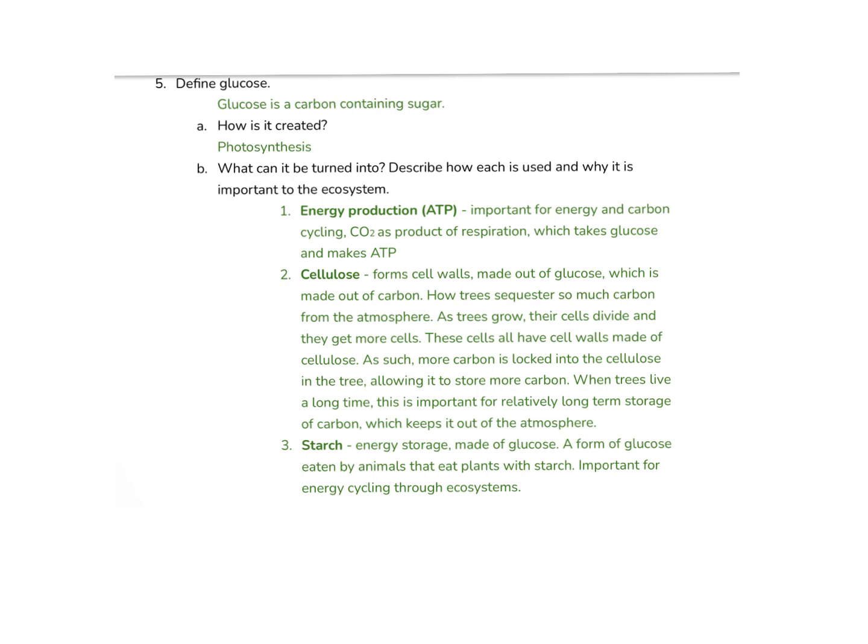Another thing that glucose can be used for is cellulose, which forms the cell walls. Cell walls are made out of glucose — long chains of them. Trees sequester so much carbon from the atmosphere that as trees grow, their cells divide and they get more cells. These cells all have cell walls made out of cellulose. As such, more carbon is locked into the cellulose in the tree, allowing it to store more carbon.